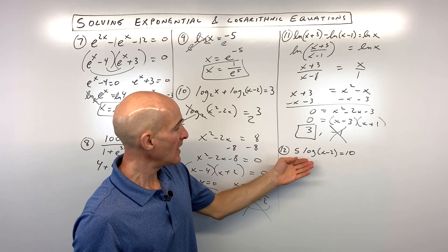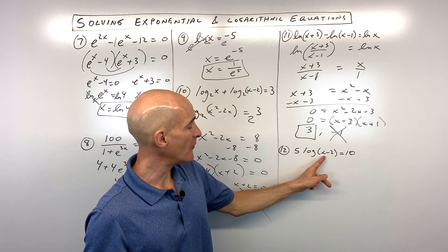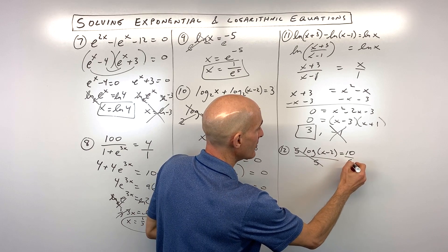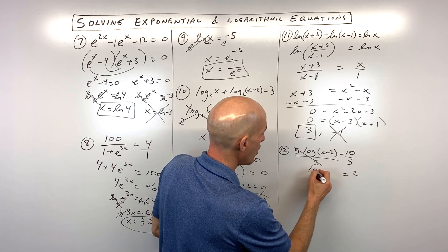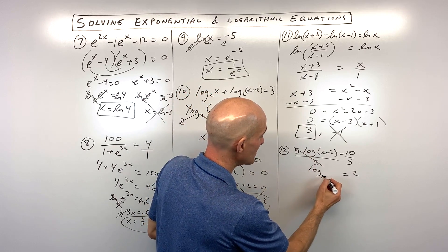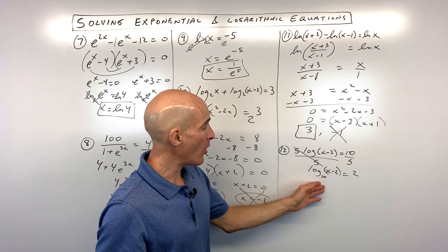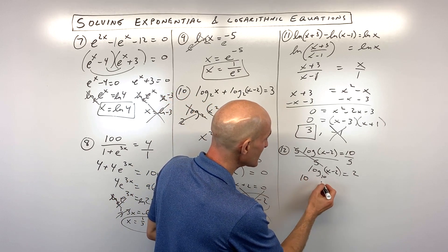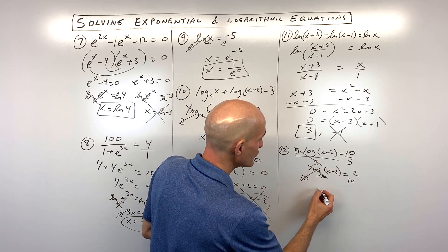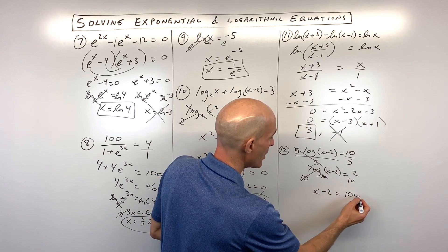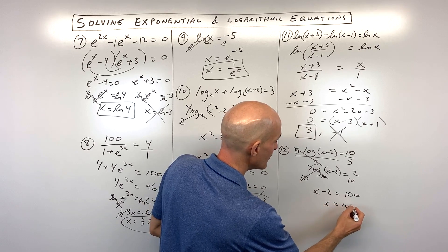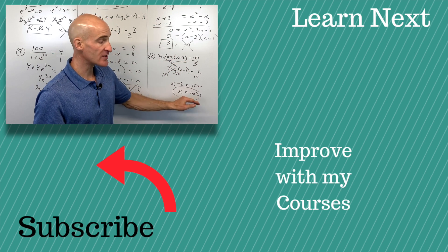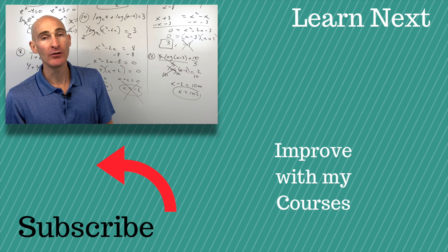Final question: working from the outside in, divide both sides by 5 to get 2 equals log of x minus 2. The base isn't written, so it's understood to be base 10. To isolate x, exponentiate both sides using base 10 — those are inverses — giving x minus 2 equals 10 squared, which is 100. Add 2 to both sides: x equals 102. Put it back in — we're taking the log of a positive quantity — so that's the final result.